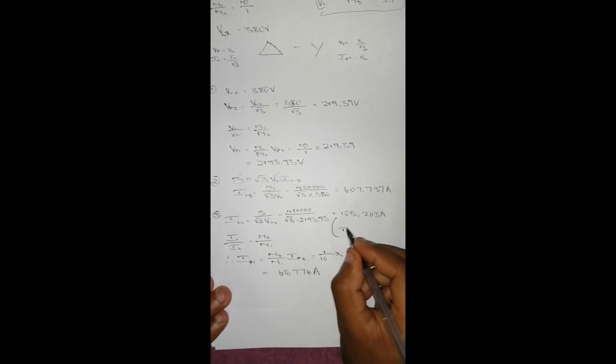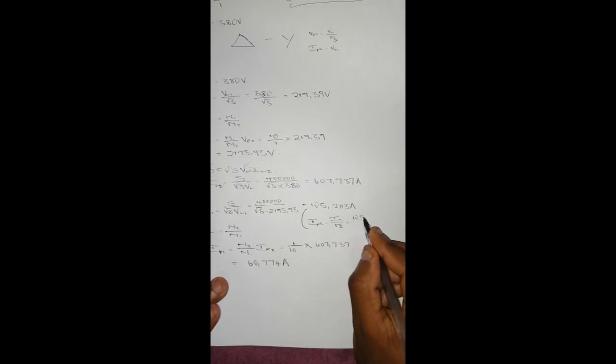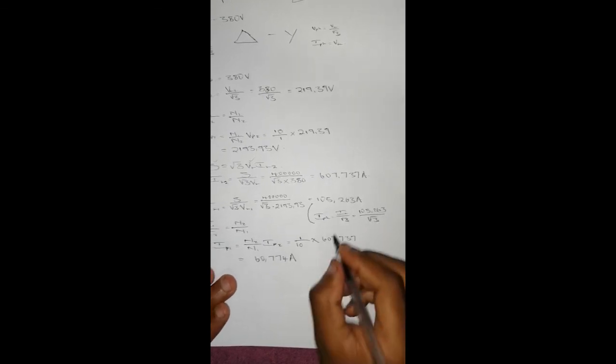And I've just realized that I didn't convert this to phase. So to convert this to phase, I phase equals I line over square root of 3 for delta. So 105.263 over square root of 3 gives us the same answer, 60.774 amps.